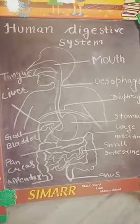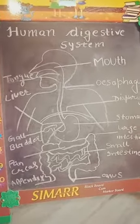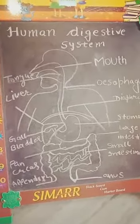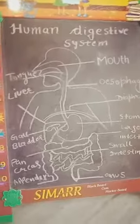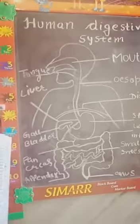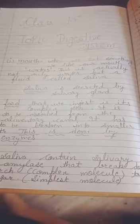Today I will teach you the human digestive system. We will start with the mouth. When we eat something, our mouth waters — this is actually not water but a fluid called saliva. Saliva contains salivary amylase, which breaks down starch from a complex molecule to its simplest form.